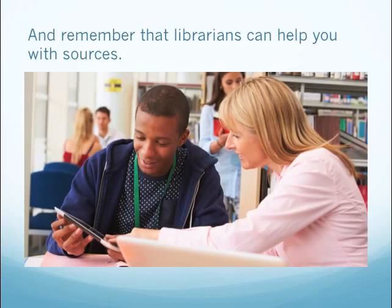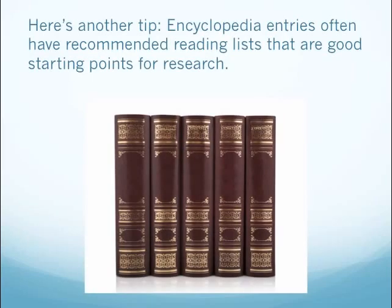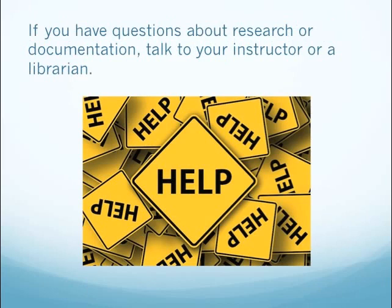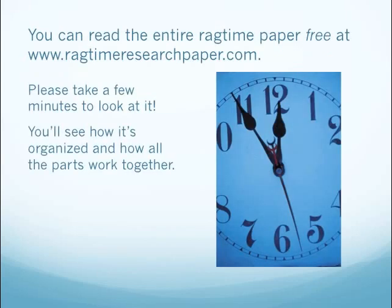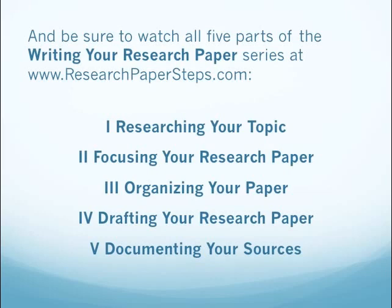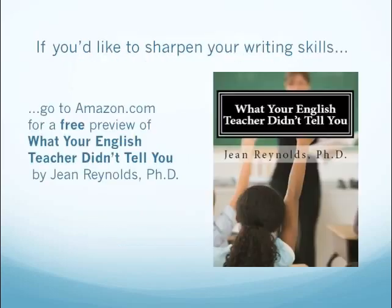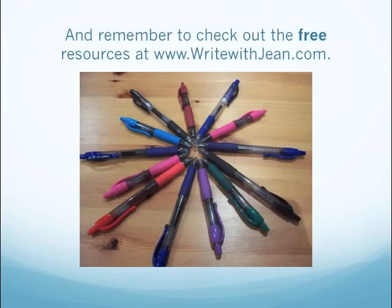Here's another tip: encyclopedia entries often have recommended reading lists that are good starting points for research. If you have questions about research or documentation, talk to your instructor or a librarian. You can read the entire Ragtime paper free at RagtimeResearchPaper.com. Be sure to watch all five parts of the Writing Your Research Paper series at ResearchPaperSteps.com. If you'd like to sharpen your writing skills, take a look at my book, What Your English Teacher Didn't Tell You, available at Amazon.com. Check out the free resources at WriteWithJean.com. Thanks for watching.